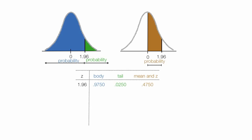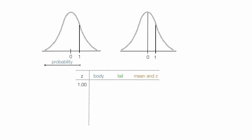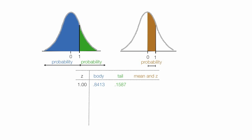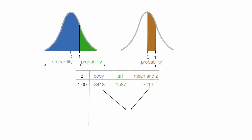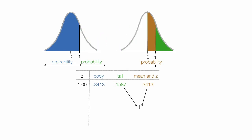I'm going to do two more examples: a z-score of positive 1 and a z-score of negative 1. If my z-score is 1, the body is the area below 1, and the tail is the area above 1. You should try to look up the value 1 in your z-score table at the back of your stats book and follow along. If I add the body and tail together, that adds up to 1, or 100% — everything under the bell curve. When I subtract the mean-to-z area from the body, I get a value of 0.500, or 50%. And when I add the tail plus the area from the mean to z, it equals 0.50, which is half the area under the curve.